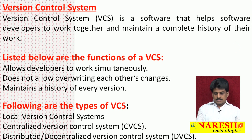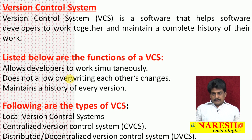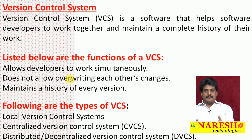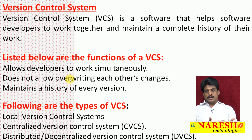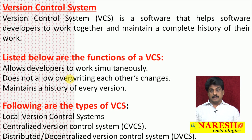The functions of VCS include: allowing developers to work simultaneously, not allowing overwriting of each other's changes. For example, if three developers exist and developer one makes a modification, developer two cannot overwrite it. It also maintains a history of every version for future reference.